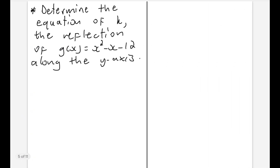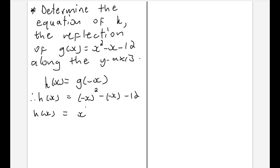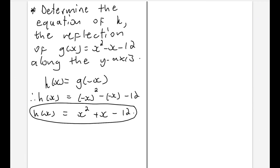Let's look at an example. Determine the equation of h, the reflection of g(x) = x² - x - 12 along the y-axis. If h is a reflection of g along the y-axis, then h(x) = g(-x). Everywhere I see x in the g(x) equation, I put -x: h(x) = (-x)² - (-x) - 12 = x² + x - 12. This is the equation of h(x), the reflection of g(x) along the y-axis.